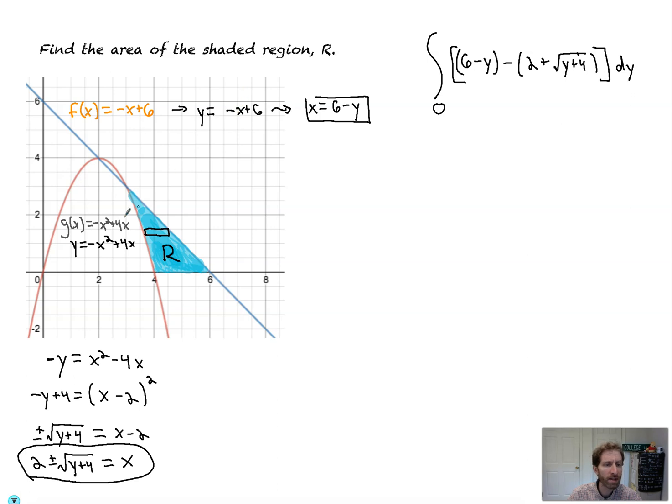But to verify that, I'm going to set these two functions equal. It's easier to set those equal to each other. So I get minus x plus 6 is equal to minus x squared plus 4x. And we solve. So I'm going to add x squared to both sides. Subtract 4x.